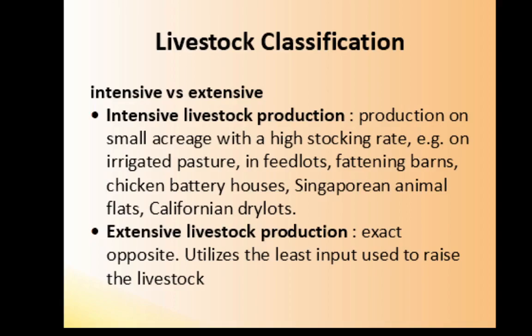Now we move on to livestock classification: intensive versus extensive. Intensive production involves small acreage with a high stocking rate — examples include irrigated pastures, feedlots, fattening barns, chicken battery houses, animal flats, and dry lots. Extensive livestock production is the exact opposite, utilizing the least input to raise livestock.